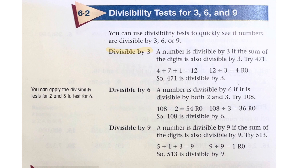Divisible by 3. A number is divisible by 3 if the sum of the digits is also divisible by 3. A sum means addition — the answer to the addition problem. So let's try 471: 4 plus 7 plus 1 equals 12. Is 12 divisible by 3? 12 divided by 3 is 4 with no remainder. So 471 is divisible by 3. That's a trick to do it quickly.